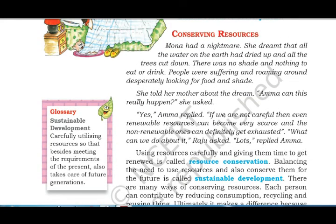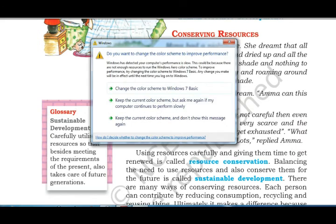Conservation of resources is very necessary to avoid scarcity. Mona had a nightmare in which there was no water, trees were cut down, and people were desperately looking for food and shade. Her mother explained that if we do not use resources carefully, renewable resources can become very scarce and non-renewable resources can get exhausted entirely.